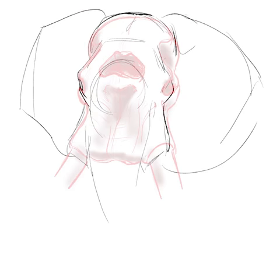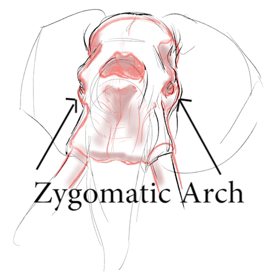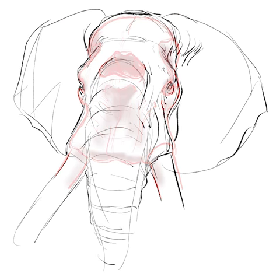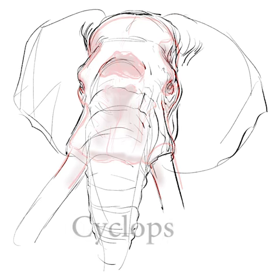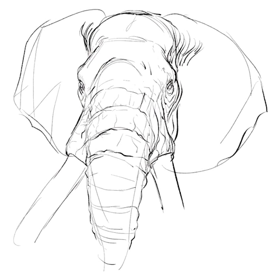Remember the zygomatic arch? The elephant has one too. Use it to determine where the eye will be. Some people think the nasal cavity in the center of the skull is where the legend of the Cyclops originated.